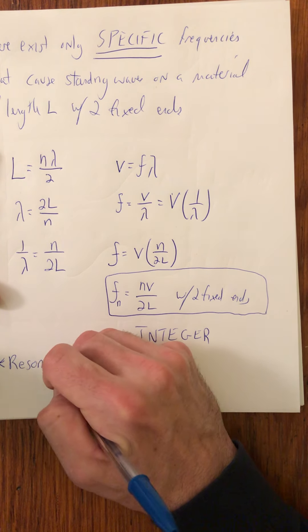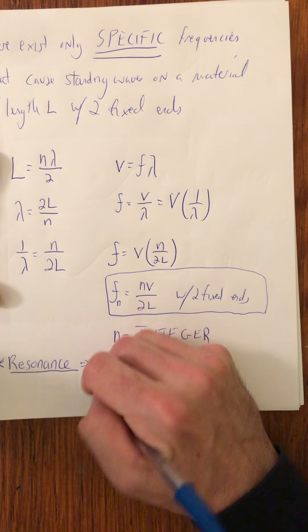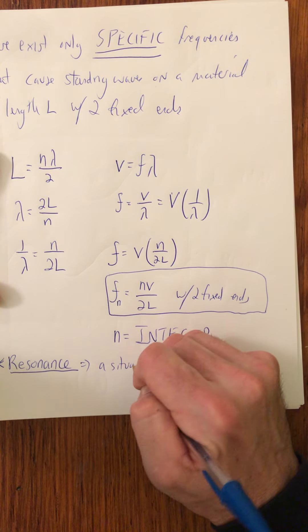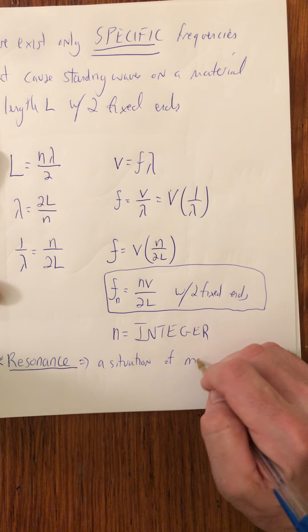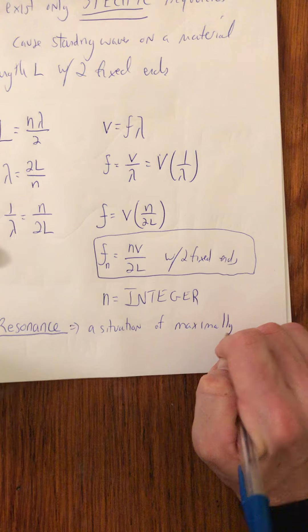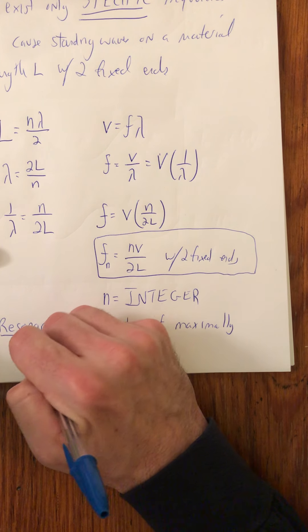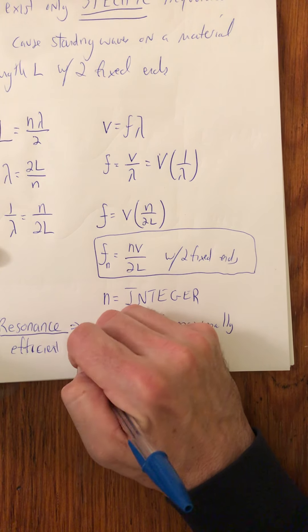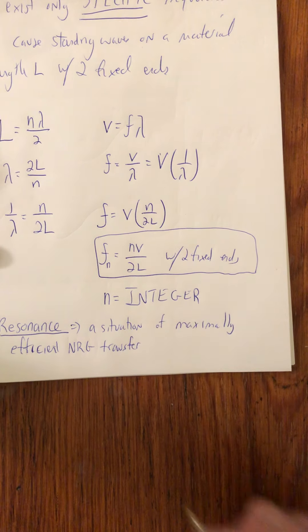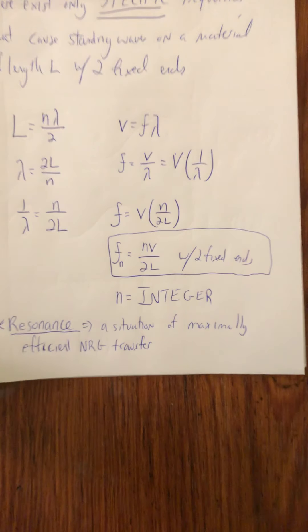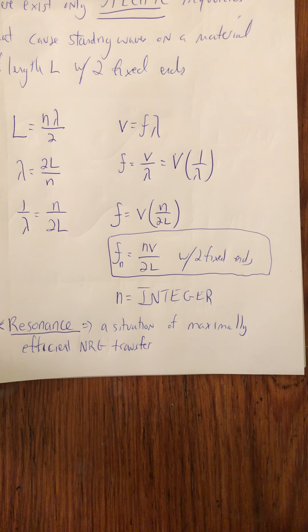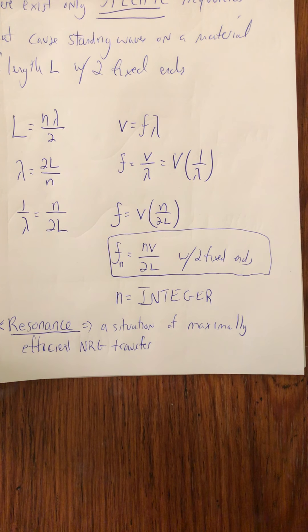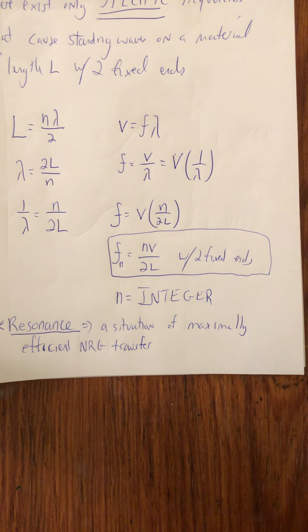And it's going to be something known as resonance. Resonance is a situation of maximally efficient energy transfer. So a standing wave is a resonance phenomena because, as we saw in those demos, when you hit these specific frequencies, the amplitude, which indicates the energy of the wave, got much larger than when you weren't at those specific frequencies.